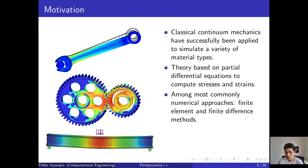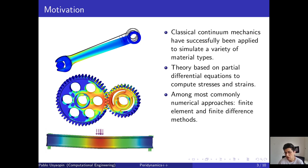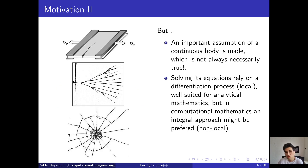What is the main motivation of peridynamics? Classical continuum mechanics has been successfully applied to simulate a variety of material types. It is a theory based on partial differential equations in which you compute stresses and strains, and among the most common numerical approaches you can find finite elements and finite difference methods.